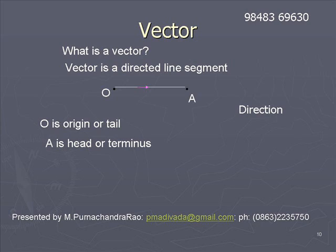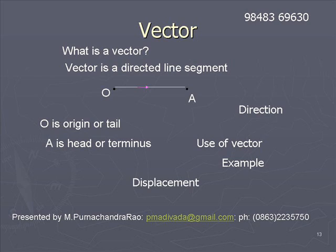A vector is a mathematical figure used to represent any vector physical quantity. To understand the representation of a vector physical quantity, let us go through an example. Let us take displacement and try to understand how the concept of vector is used in representing displacement.